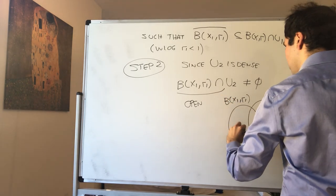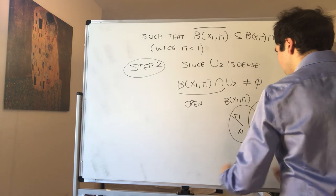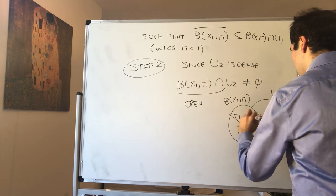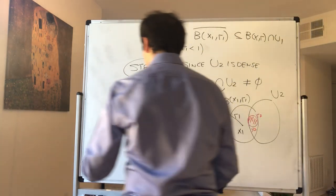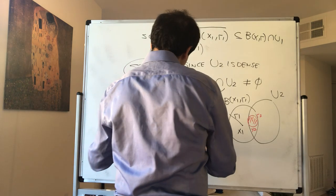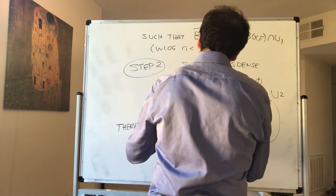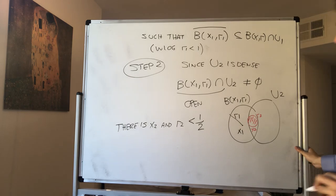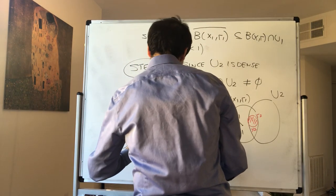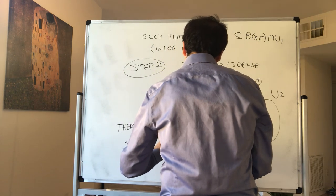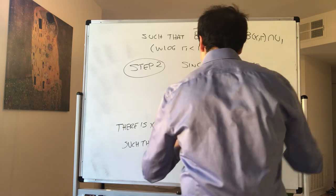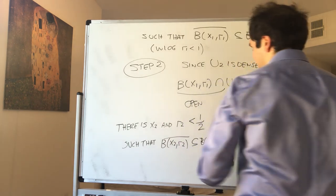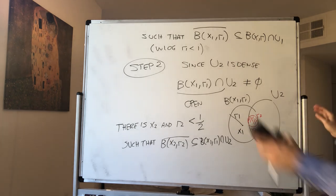This is x1 with radius r1. And what this is saying is we can fit a new ball B(x2,r2). There is x2 and r2 without loss of generality is less than 1 half, such that B(x2,r2), again without loss of generality closure, is included in B(x1,r1) intersect u2. And then we can just continue that way.